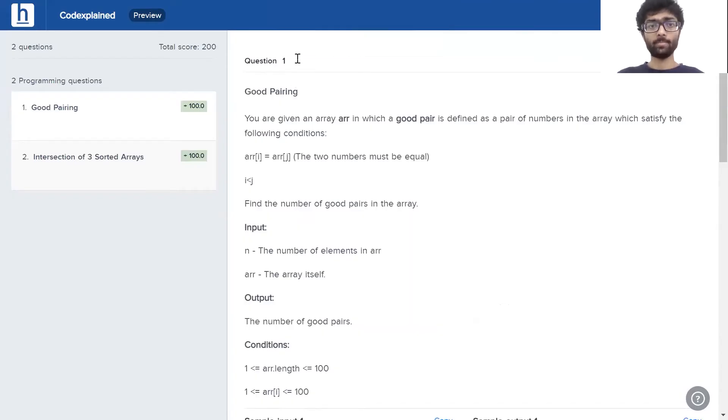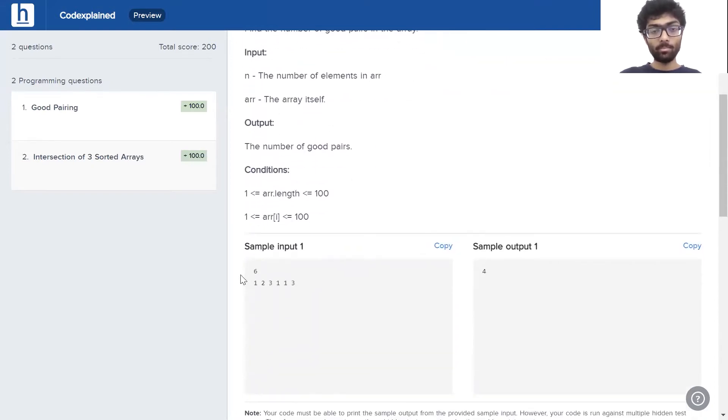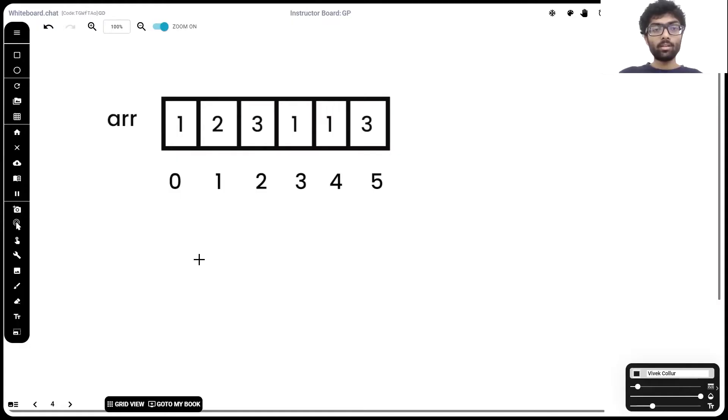The problem is titled Good Pairing. You are given an array in which a good pair is defined as a pair of numbers in the array which satisfy the following conditions: the two numbers are equal and i is less than j. Find the number of good pairs in the array. Here we can see our input is the size of the array and the array itself. It has six elements and this is the output. Let's have a closer look at it. Here we can see the array itself along with its indices. The array is zero-indexed so it starts from zero.